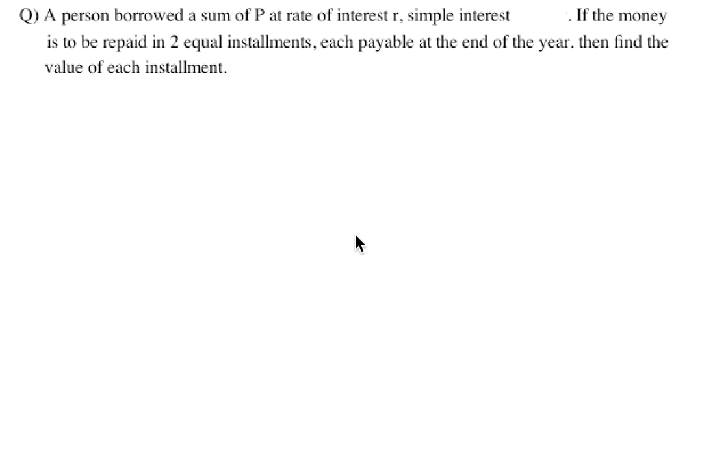We have been given that a person borrowed a sum of P at the rate of interest r, simple interest. If the money is to be repaid in two equal installments, each payable at the end of the year, then find the value of each installment. Pause the video and try it yourself. If you don't get it, then look at the solution.